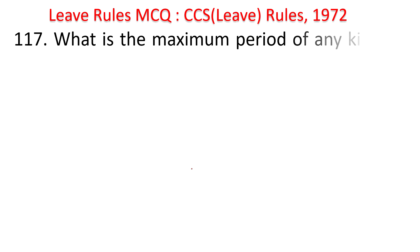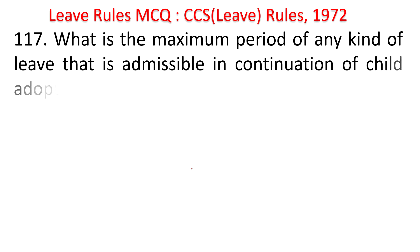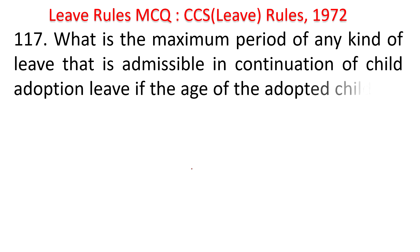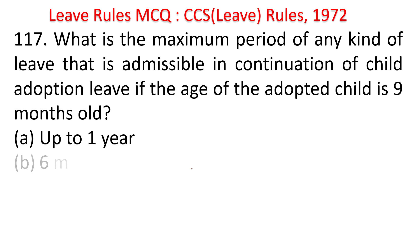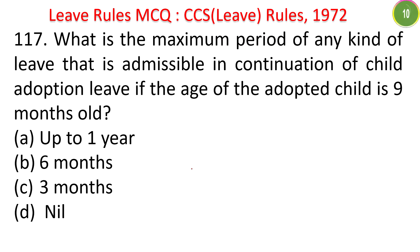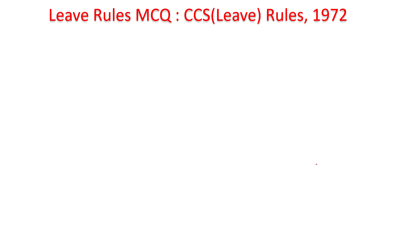What is the maximum period of any kind of leave admissible in continuation of child adoption leave if the age of the adopted child is 9 months old? Options: up to 1 year, 6 months, 3 months, nil. The answer is 3 months — leave is allowed up to 12 months of age of the child; 12 minus 9 equals 3 months remaining.